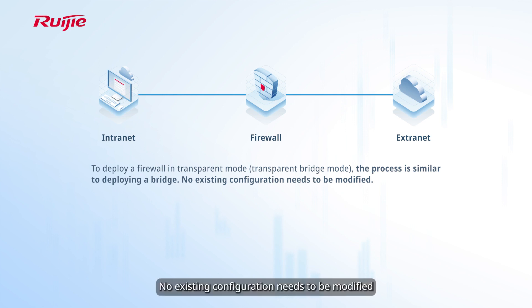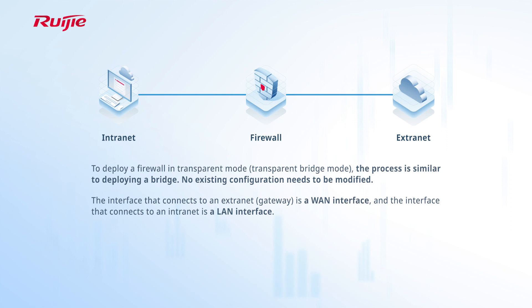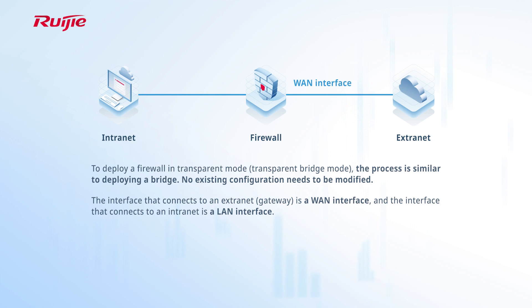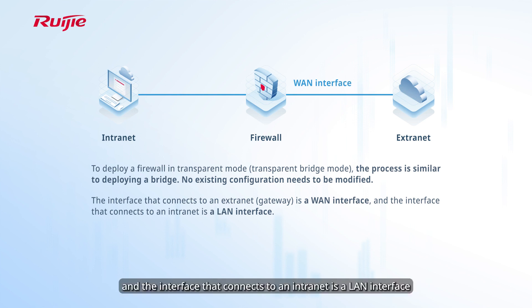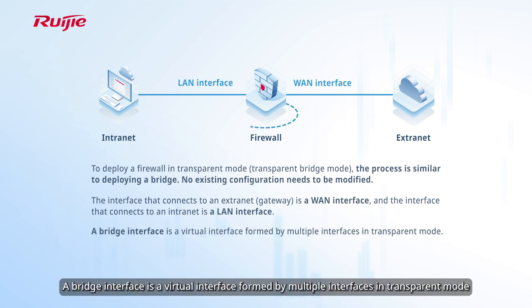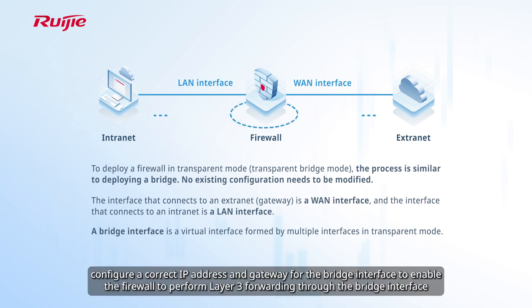No existing configuration needs to be modified. Interface type specifies the logical type of an interface. The interface that connects to an extranet or gateway is a WAN interface, and the interface that connects to an intranet is a LAN interface. A bridge interface is a virtual interface formed by multiple interfaces in transparent mode. For a firewall in transparent mode, configure a correct IP address and gateway for the bridge interface to enable layer 3 forwarding through the bridge interface.